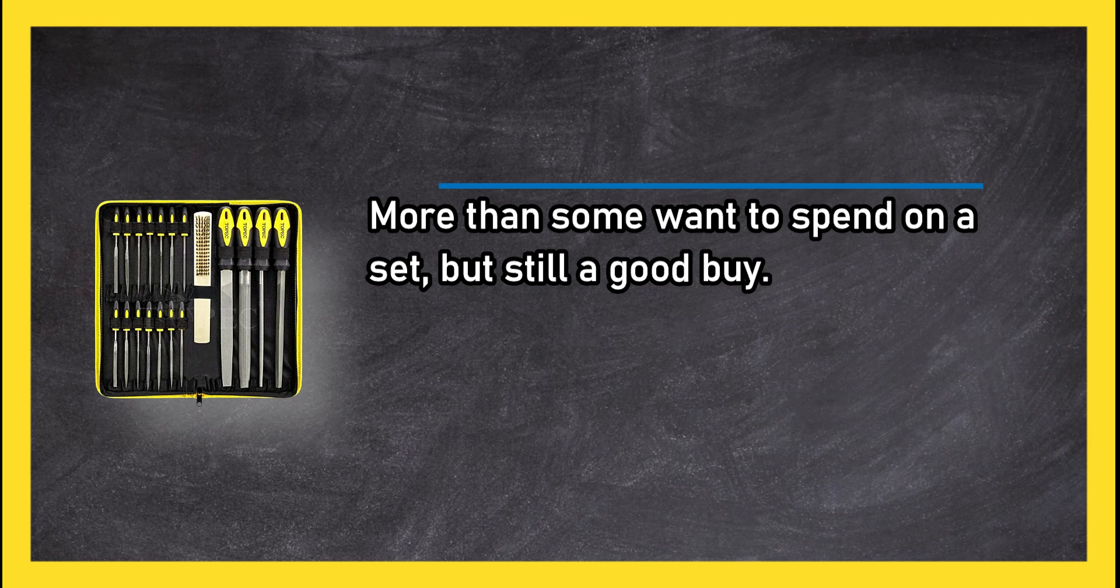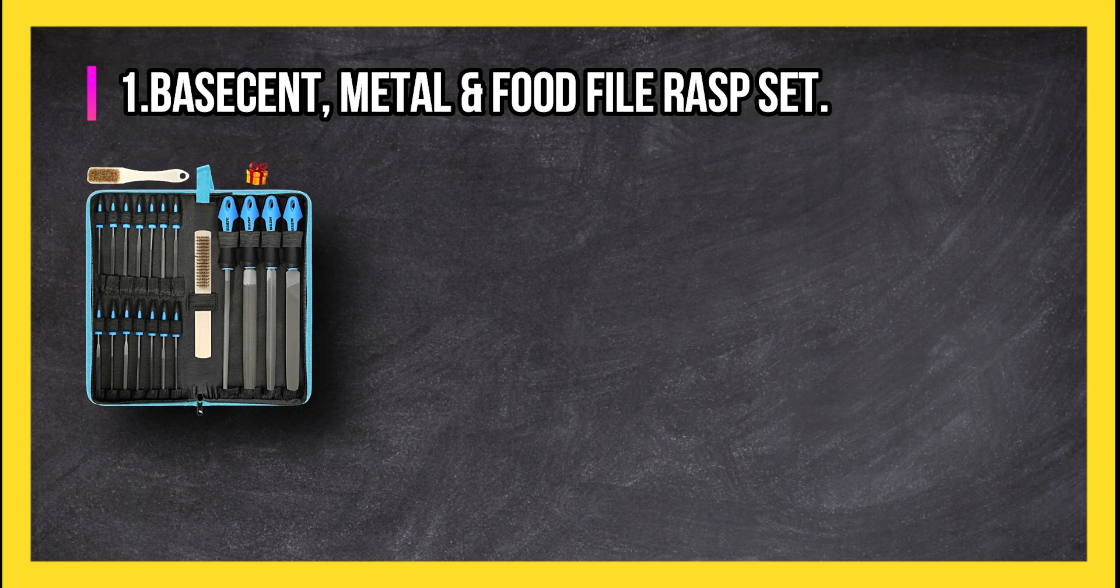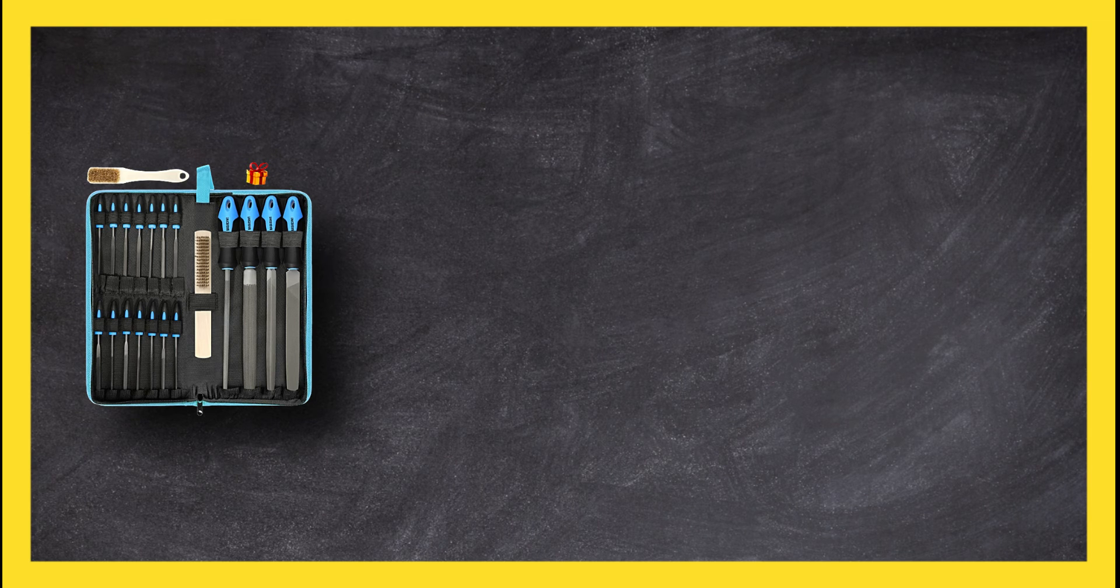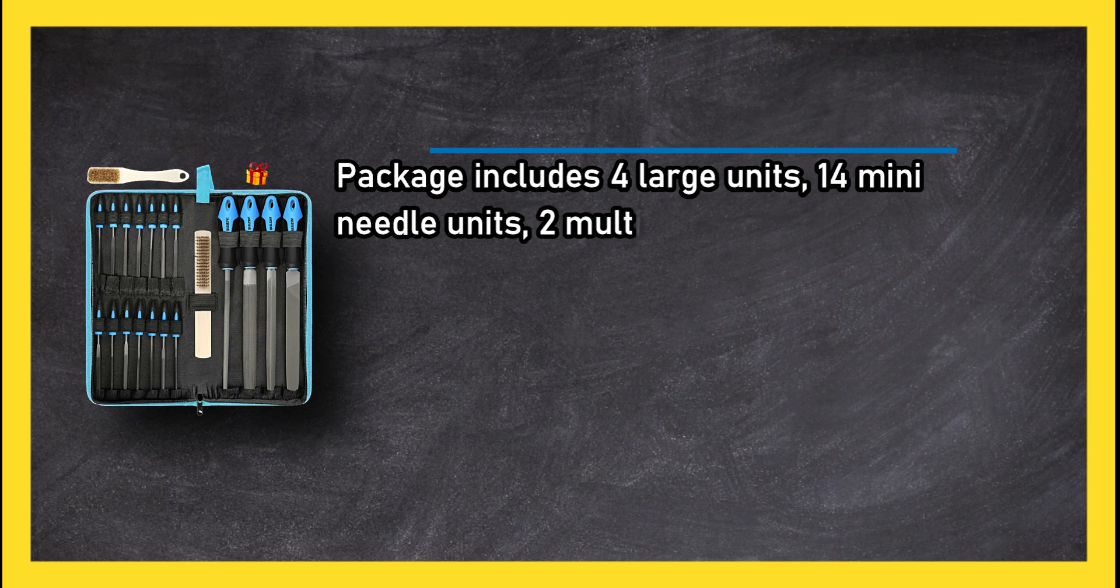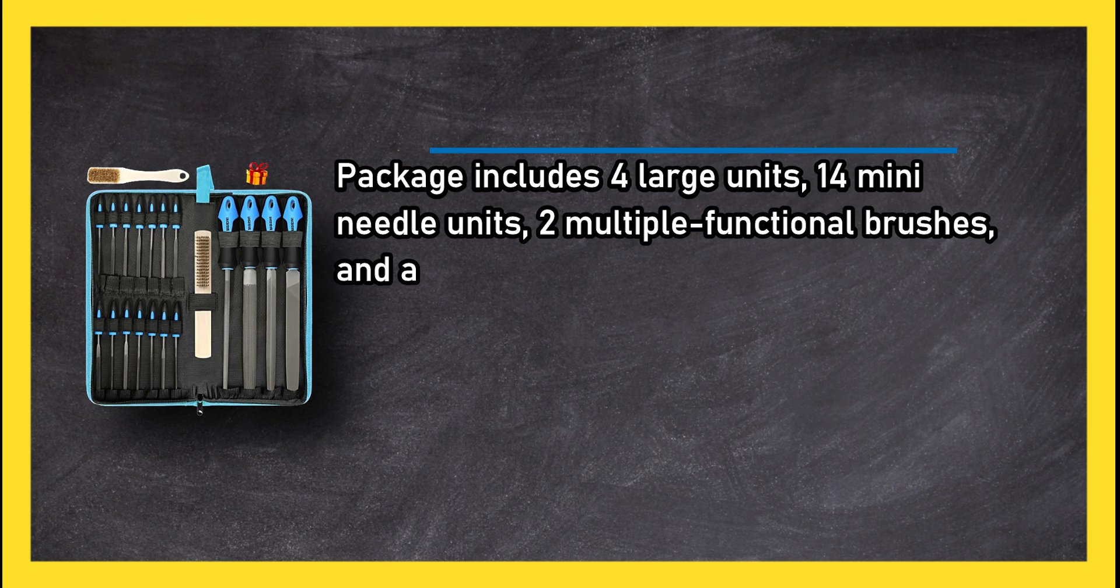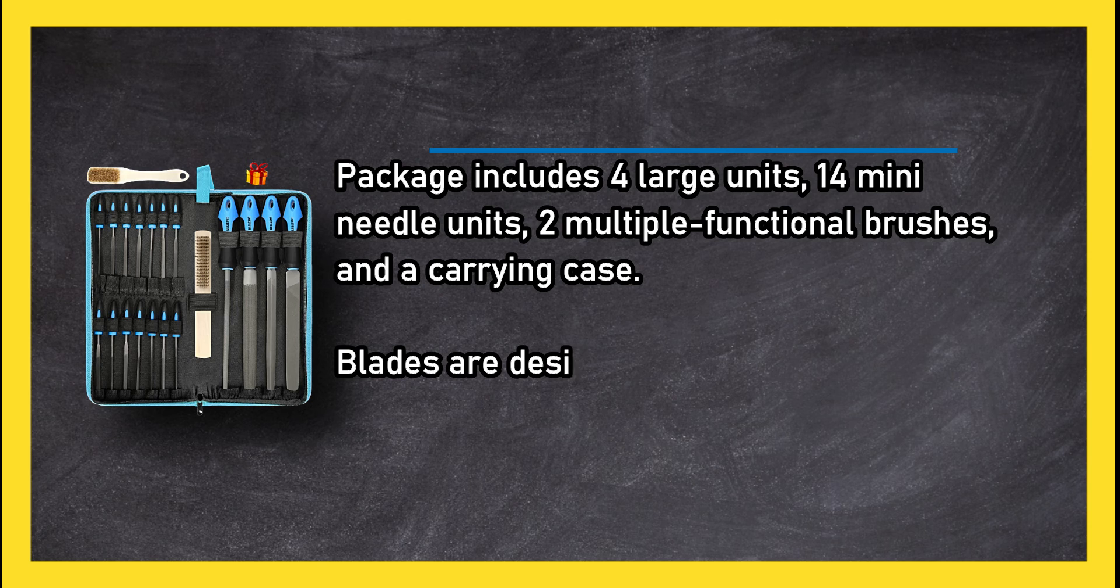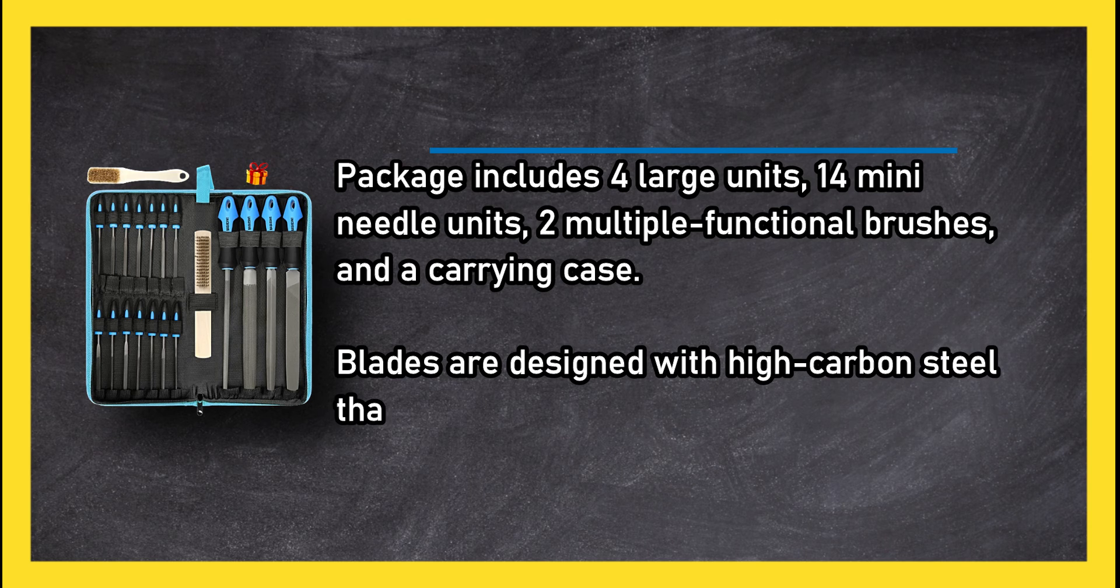At number one, base scent metal and food file rasp set. Package includes four large units, 14 mini needle units, two multifunctional brushes, and a carrying case. Blades are designed with high carbon steel that doesn't break easily.